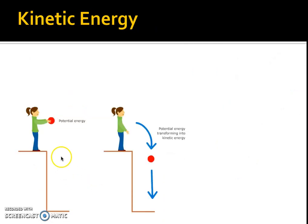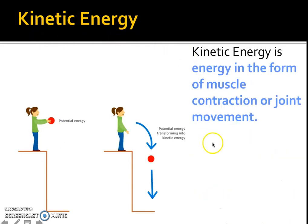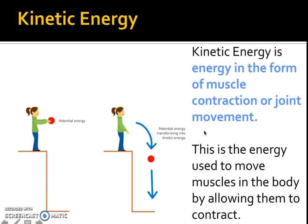Kinetic energy is the energy in the form of muscle contraction, joints, or movement — that's one of the easiest ways to remember it. Here, a person dropping a ball has moved from potential energy to kinetic energy; the process of movement, some kind of action has taken place.